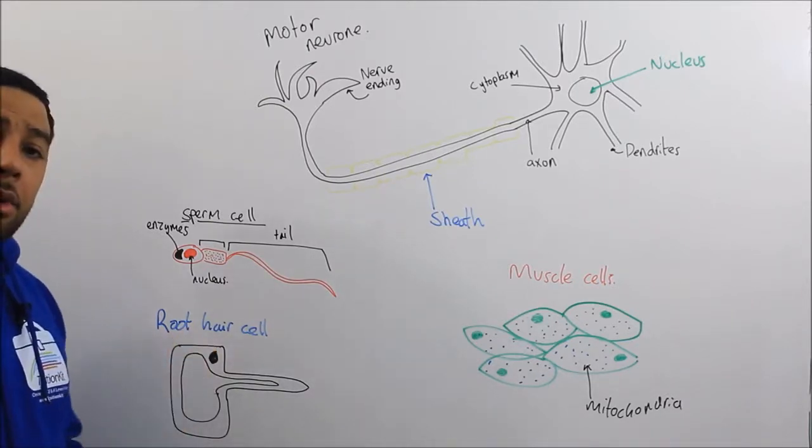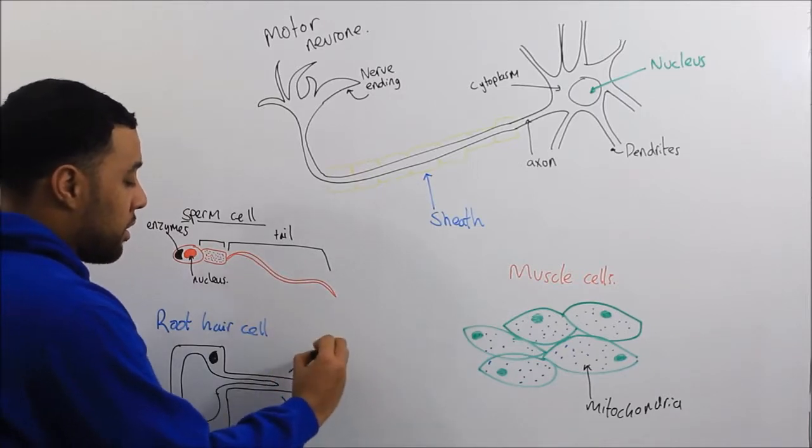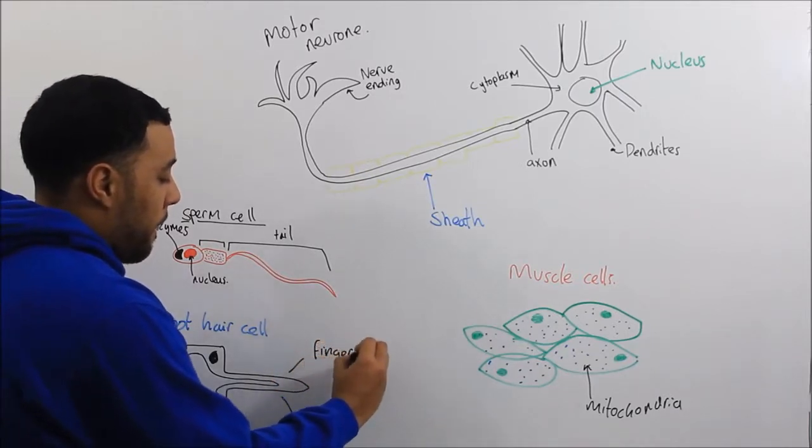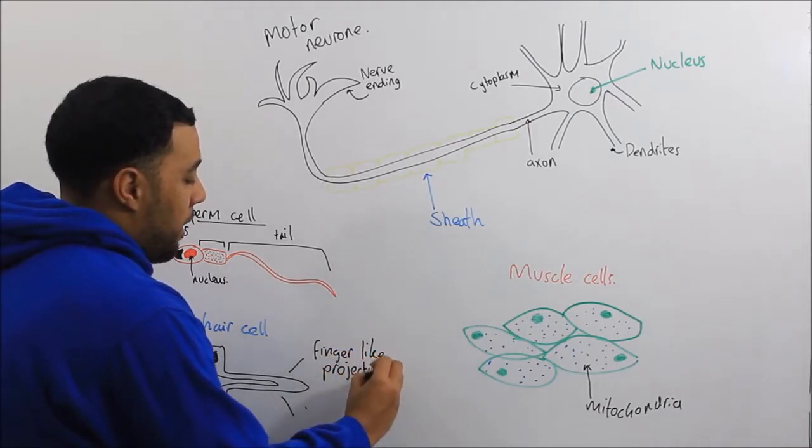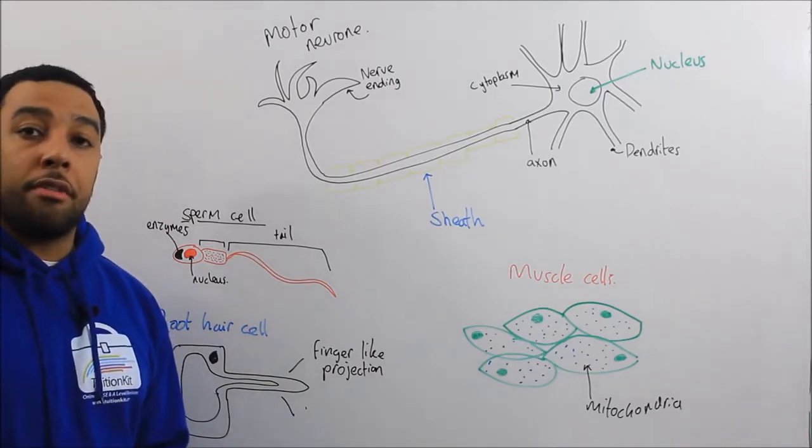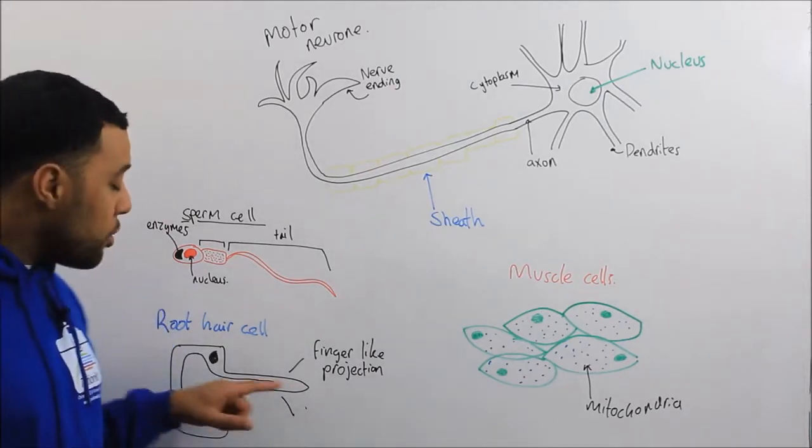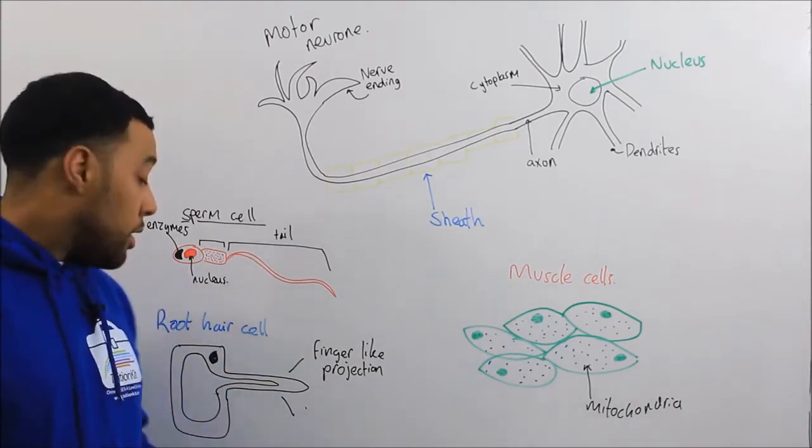And the root hair cell has this finger-like projection. And this finger-like projection gives the root hair cell a large surface area. It also has a very thin cell wall so that it can absorb water quicker.